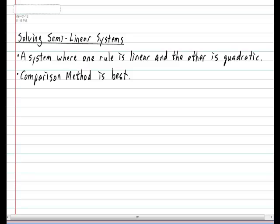The best way to learn how to solve a semilinear system is to perform one right away. So I would like you to put the following example down. Solve the system of y equals x squared minus x plus 3 versus y equals 2x plus 13. Notice that the first rule is a quadratic function and the second rule is a linear one. So we want to find out when the line will intersect the parabola.